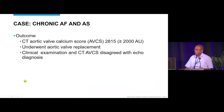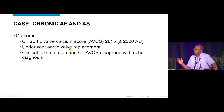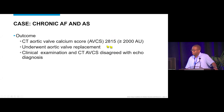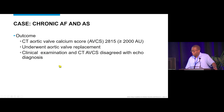The clinician disagreed with the echo diagnosis and obtained a CT aortic valve calcium score — another measure of stenosis severity where higher calcium burden corresponds to worse stenosis. The threshold in men is approximately 2,000. This patient's aortic valve calcium score was 2,800, consistent with severe AS. He underwent aortic valve replacement and improved. The clinical exam and calcium score disagreed with the echocardiogram.